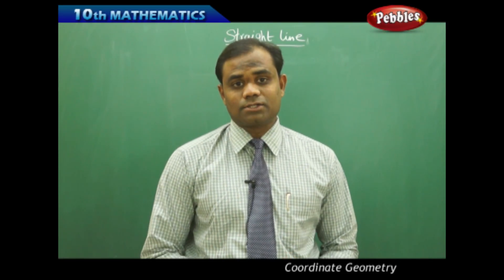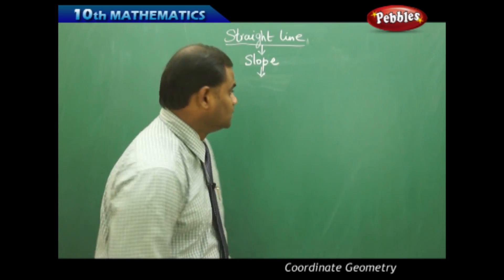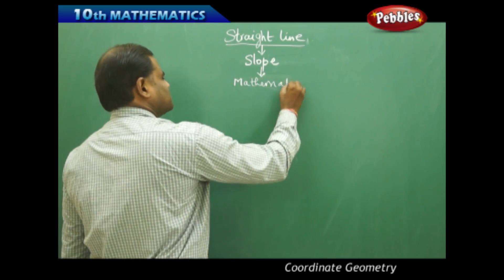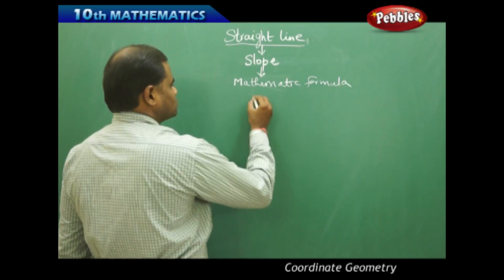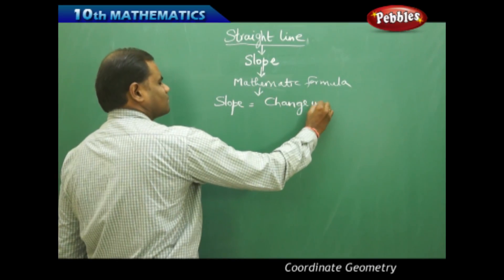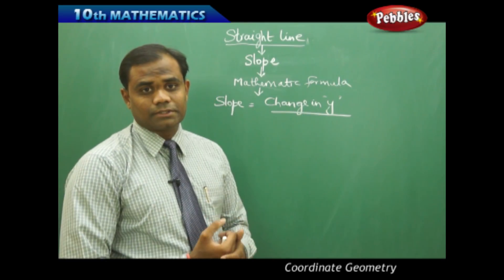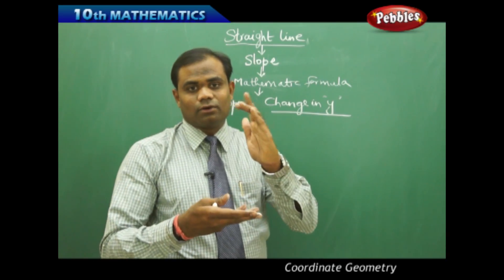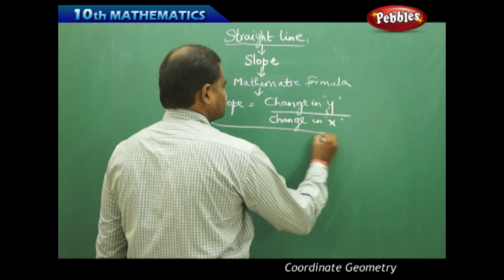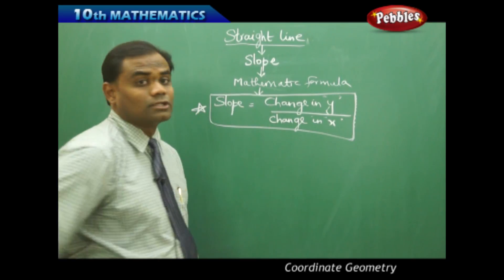With the concept of slope understood through the slider example, we now mathematically derive the formula for slope. Slope is defined as change in y by change in x. As the x coordinates change and the y coordinates change correspondingly, the difference of y coordinates divided by the difference of x coordinates defines the slope of a straight line.